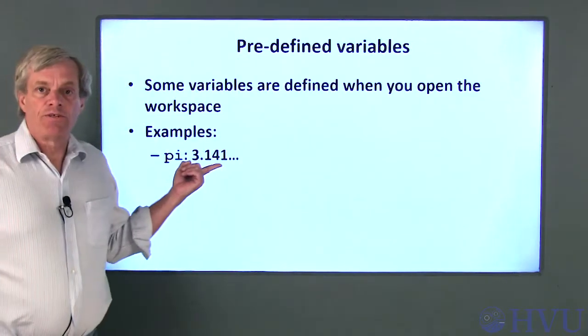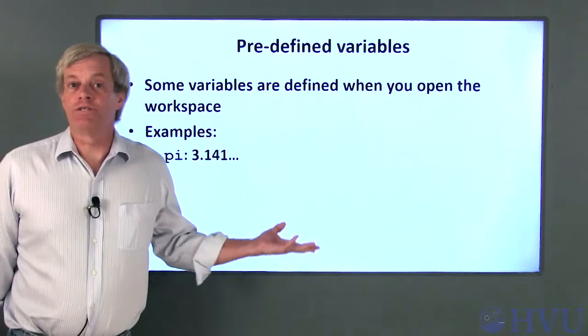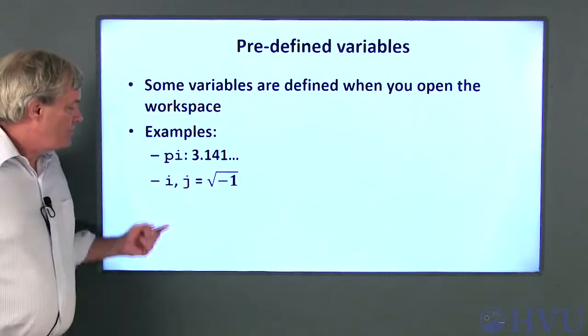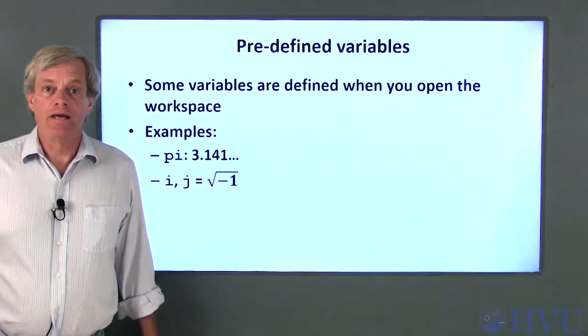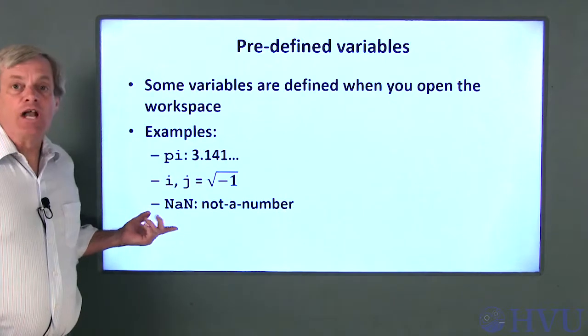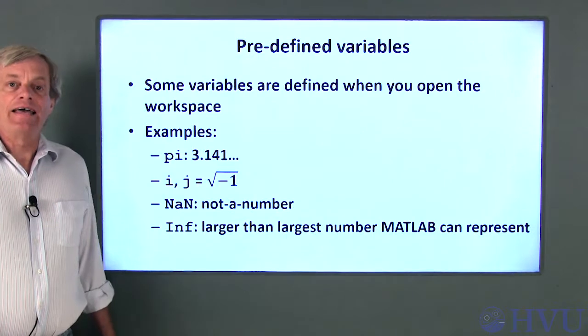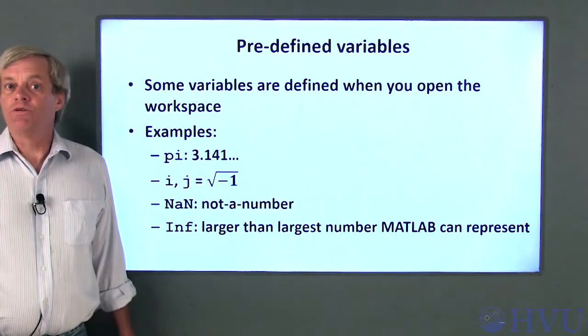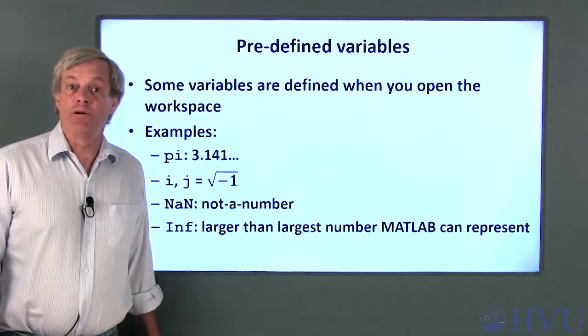pi is the ratio of the circumference of a circle to its diameter, 3.1415 and so on. MATLAB uses both i and j for the square root of negative 1. NaN stands for not a number, which is the result of an undefined mathematical operation. Inf stands for infinity, which just means that the number is larger than the largest number that MATLAB can represent.